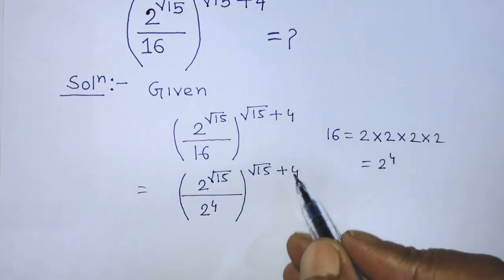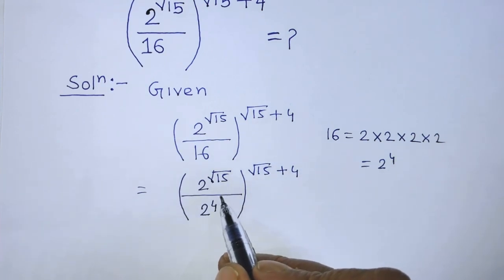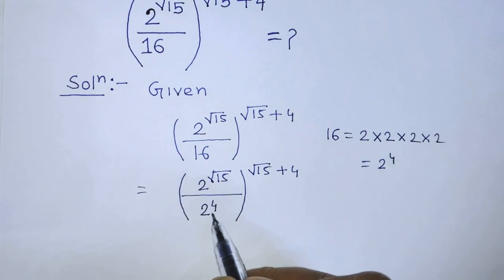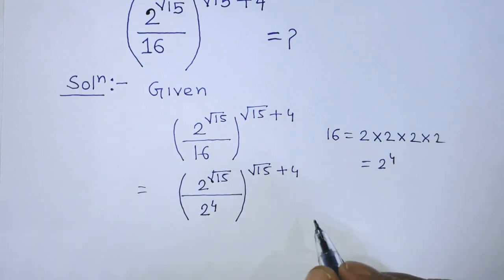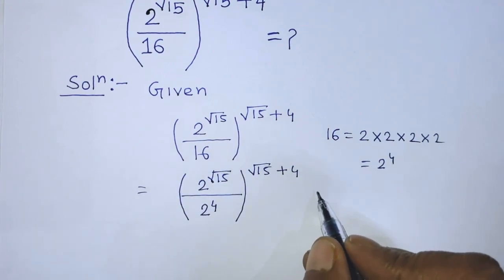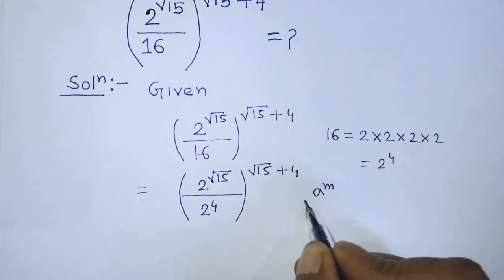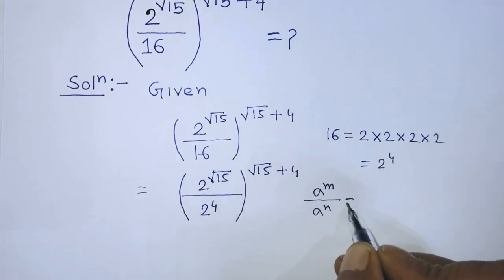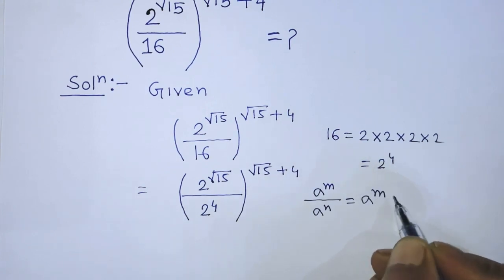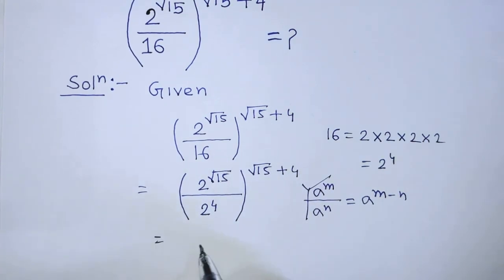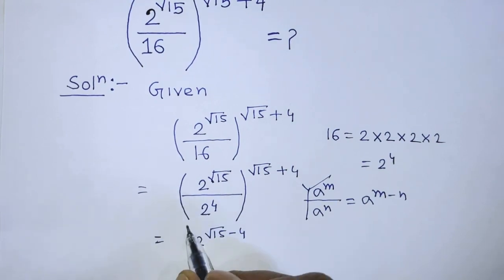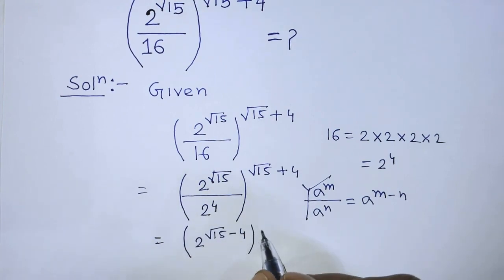In this exponential form, the base is 2 to the power square root of 15 over 2 to the power 4. To simplify this base, we apply the formula: a to the power m over a to the power n equals a to the power m minus n. According to this formula, the base becomes 2 to the power the square root of 15 minus 4, whole to the power the square root of 15 plus 4.